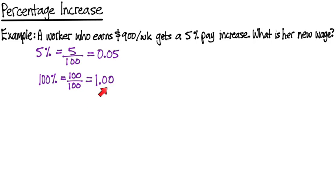100% is 1.00. We have to add them together because she's getting both of them. So she's actually going to be getting 1.05, which works out to be 105%.